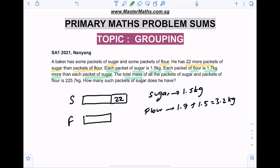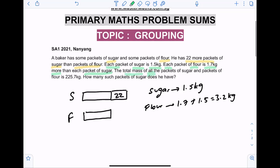Now the total mass of all the packets of sugar and flour is 225.7 kilograms. How many such packets of sugar does he have? So in this model, what we can do is put the total mass, which is gonna be 225.7 kilograms.